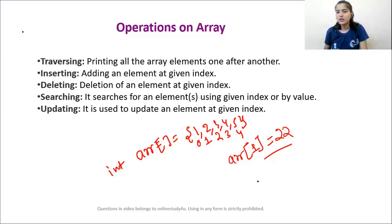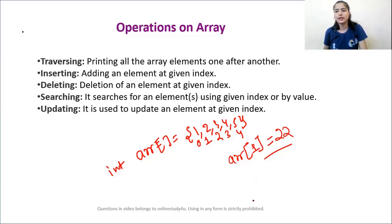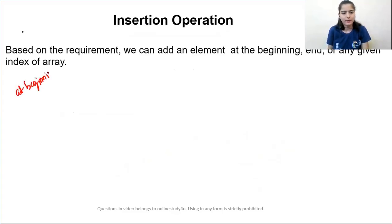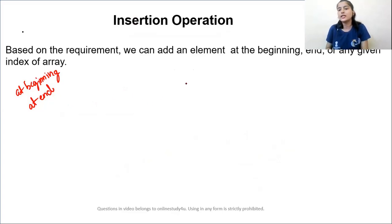I hope all the operations are clear to you. Now let's see how we are going to implement them. Traversal I've already covered. Let's discuss insertion in an array now. Insertion can happen at the beginning, at the end, or at any particular index. Let's understand what kind of algorithm we are going to use for implementing the insertion operation.